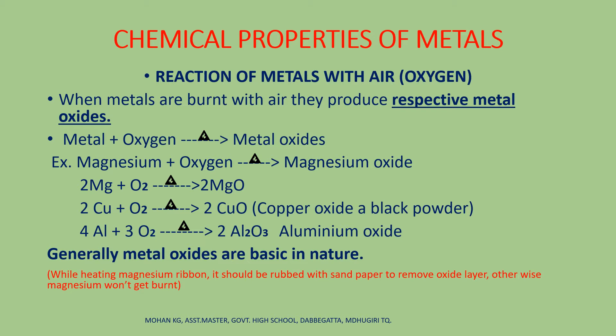Magnesium oxide, copper oxide, and aluminum oxide — these metal oxides are generally basic in nature. That means whenever these metal oxides are dissolved in water, they become bases, which can turn red litmus into blue litmus.